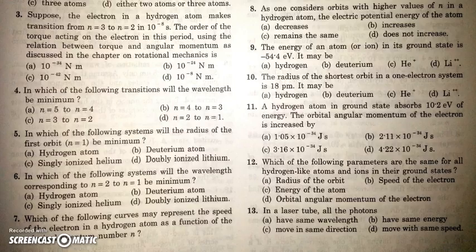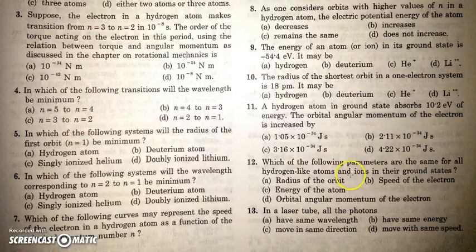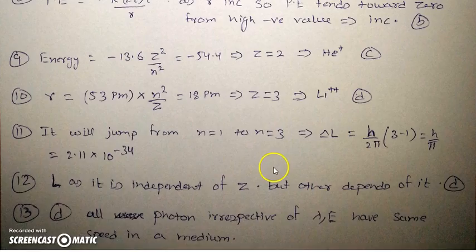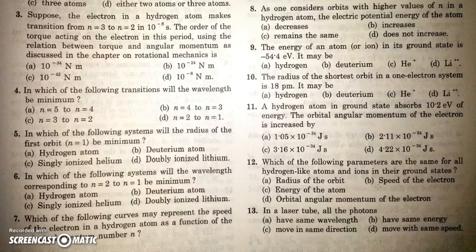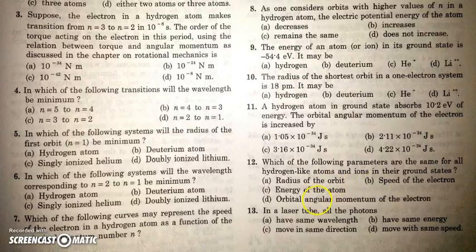In the next question which of the following parameters are same for the hydrogen like atom and ion in the ground state. So l is independent of z but all other quantities are v and energy are energy and v are dependent on z. So we can say only the orbital angular momentum will be same if atoms have different z.